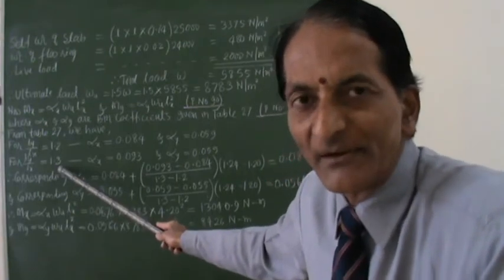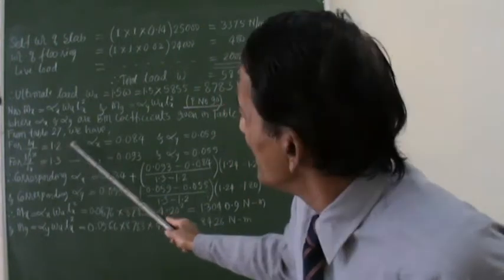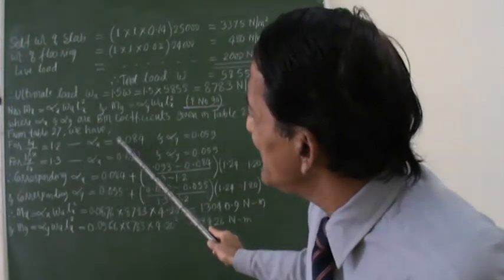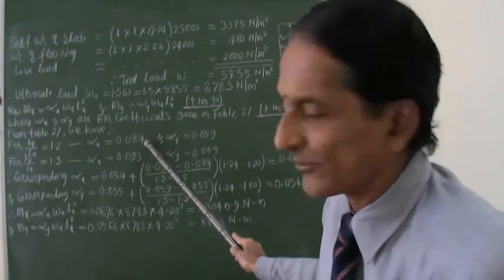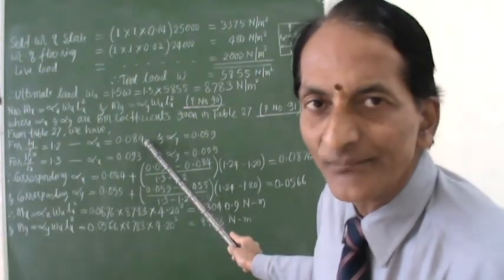So I have chosen that LY by LX is equal to 1.2 and LY by LX is equal to 1.3. If you see the code, that table number 27, for LY by LX is equal to 1.2, alpha X value is 0.084. You just see the code once, table number 27.